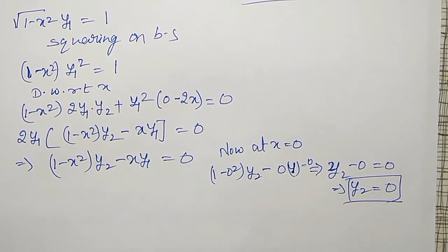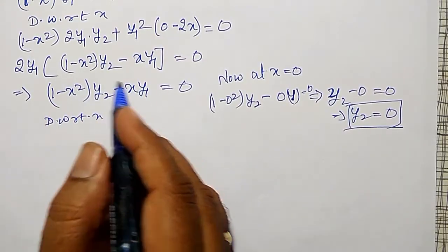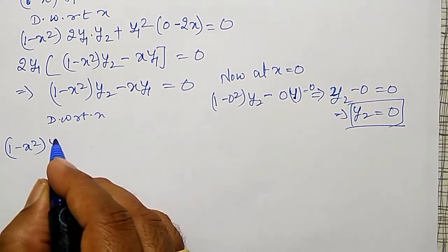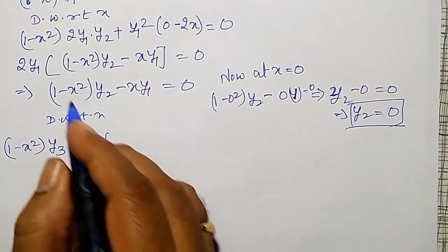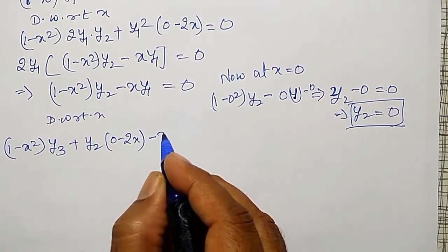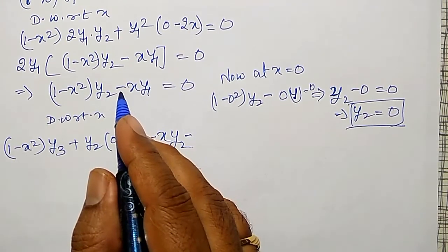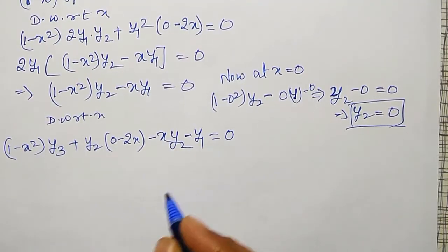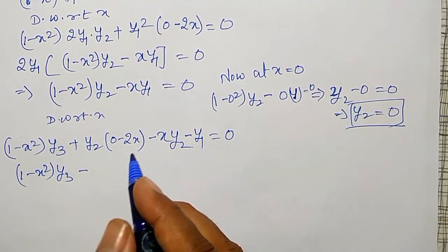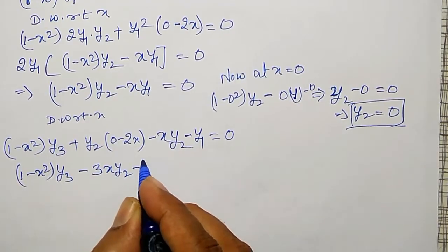Differentiating (1 − x²)·y₂ − x·y₁ = 0 again with respect to x using the product rule: (1 − x²)·y₃ + y₂·(−2x) − x·y₂ − y₁ = 0, which simplifies to (1 − x²)·y₃ − 3x·y₂ − y₁ = 0.